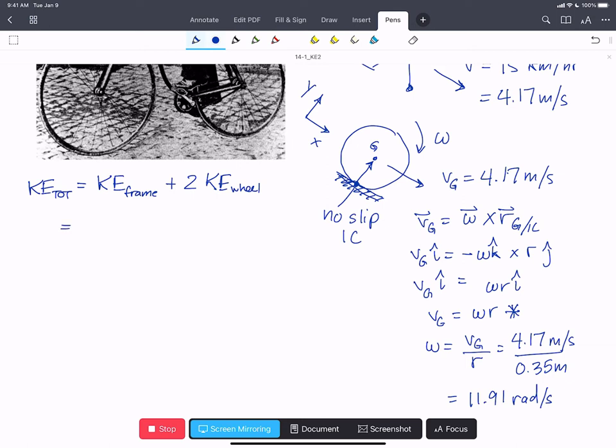And so that's going to be equal to 1 half the mass of the frame times the velocity squared, and that's going to be VG, same as the center of the wheel, plus 2 times the linear kinetic energy, 1 half the mass of the wheel times the velocity at the center of gravity of the wheel squared, plus 1 half IG omega squared.